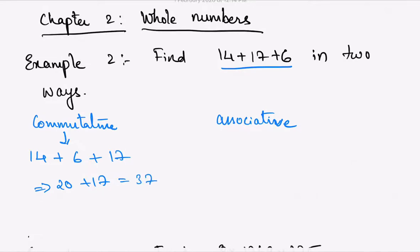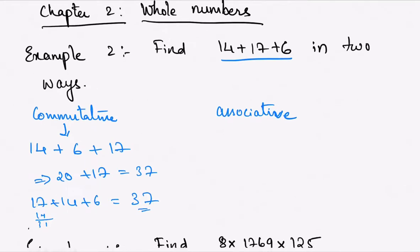If I shuffle the numbers again, suppose 17 + 14 + 6, even then I will get the same answer, 37. Let's see: 17 + 14 is 31, and 31 + 6 gives you 37. Therefore, this satisfies the commutative property.